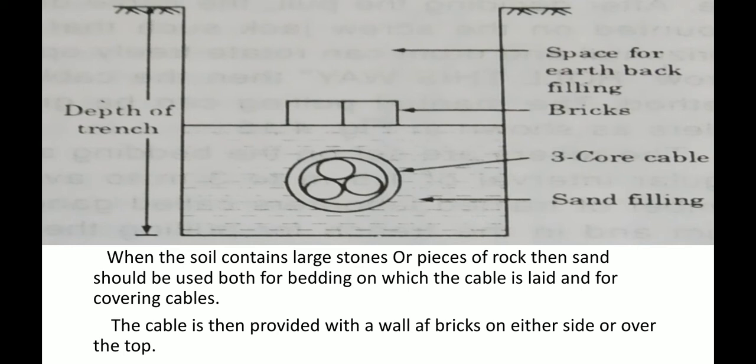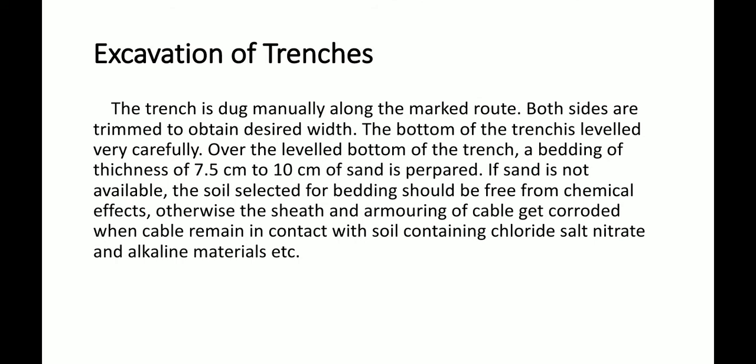The cable is then provided with a wall of bricks on either side or over the top for protection. The trench is dug manually along the marked route, and it is dug on both sides to obtain the desired width.